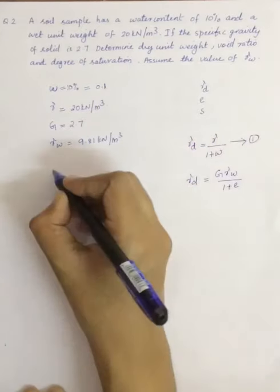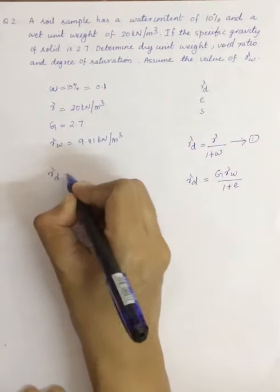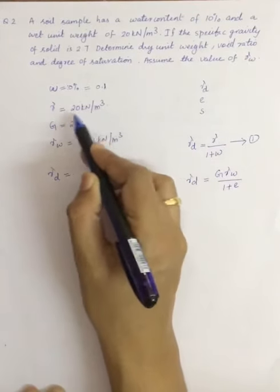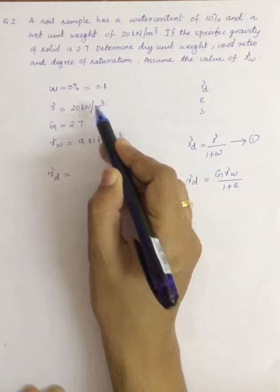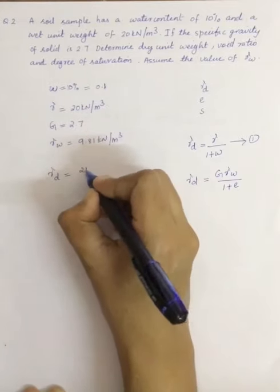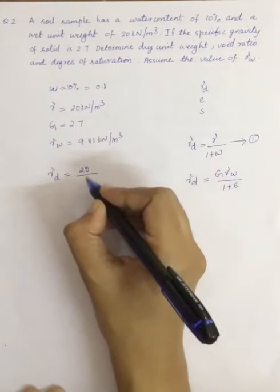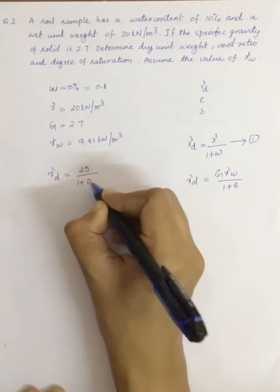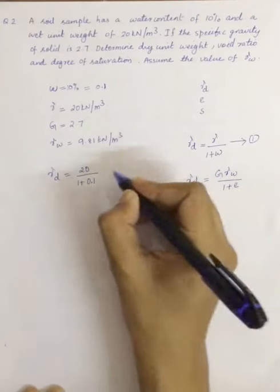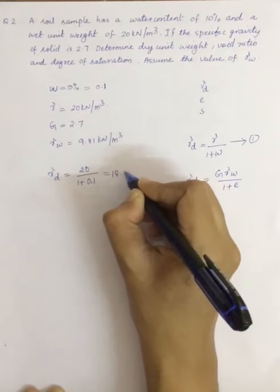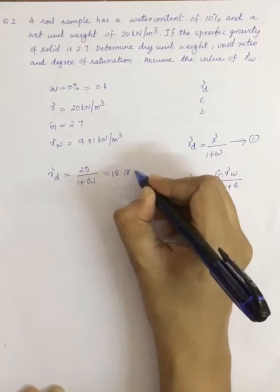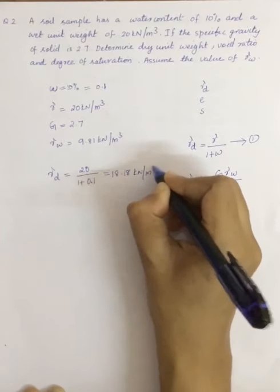So from this first equation, gamma d is equal to gamma, that is the unit weight of soil sample, divided by 1 plus the water content of the sample, 1 plus 0.1. By substituting you will get 18.18 kilo Newton per meter cube.